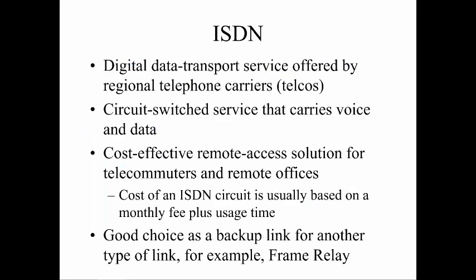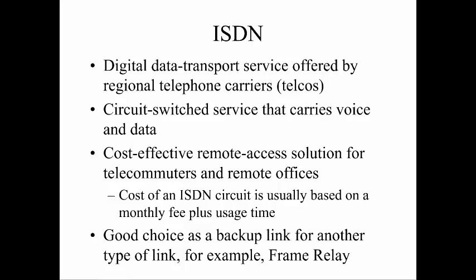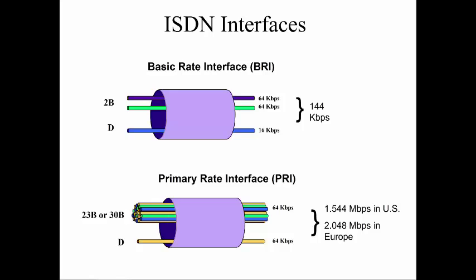Moving on to ISDN — the Digital Data Transport Service, offered normally by telephone companies. This is fairly old technology. They're normally used as a backup link, not so much a primary connection, like 56k modems. It's not so much dead technology, but definitely dying. The important part with ISDN is understanding the Basic Rate Interface (BRI) and the Primary Rate Interface (PRI), because you have to understand the different channels.